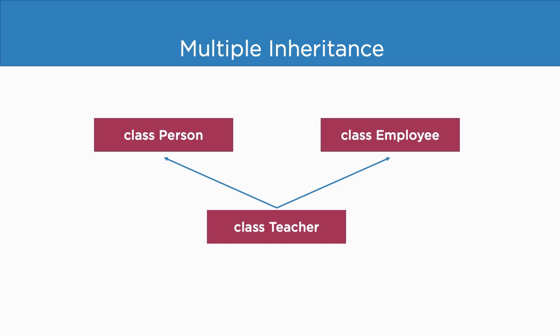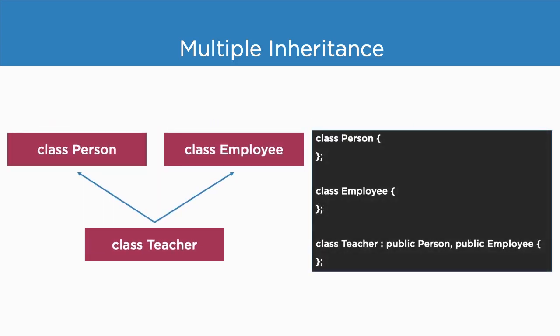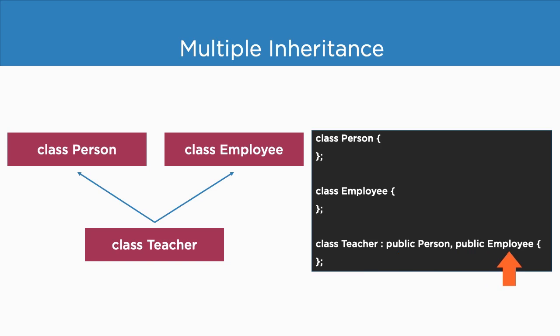Now to use multiple inheritance, the code is a bit different from what we saw in our demo. While applying multiple inheritance on class teacher, you can use a colon followed by the public keyword and then the class name like we usually do. Then give a comma followed by public and then another class name. If you have more classes from where you want to inherit properties, you can give another comma and mention the other class names.